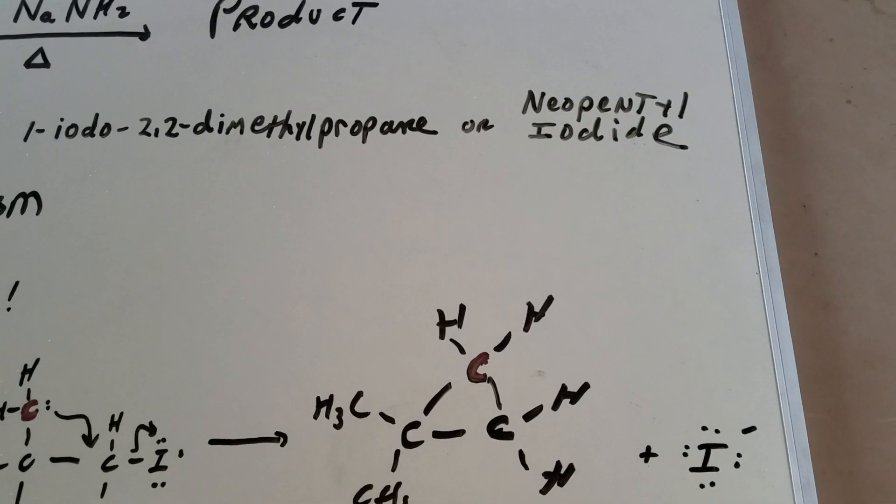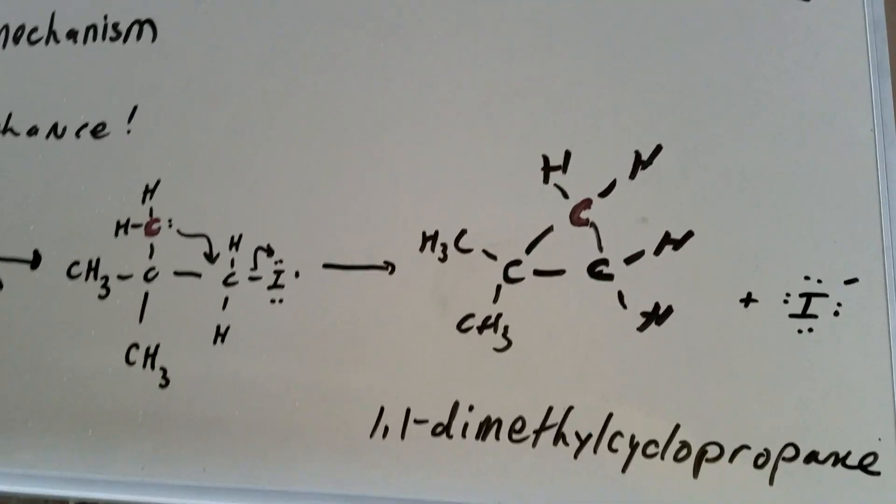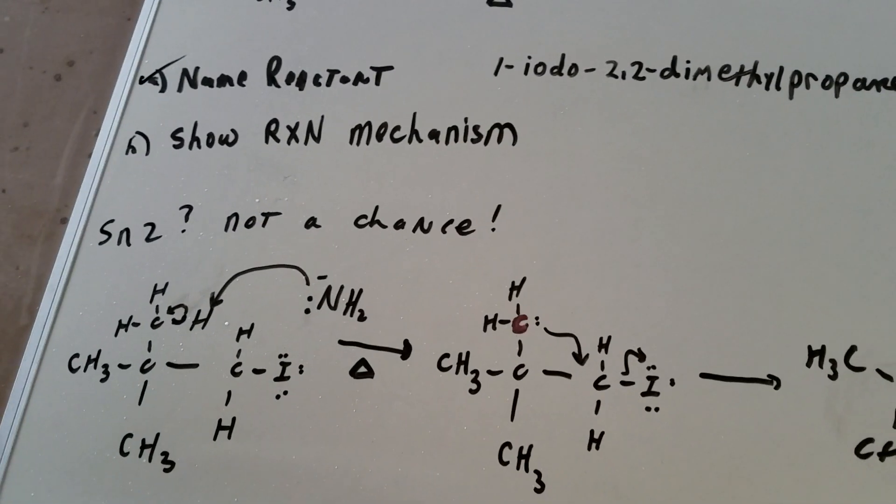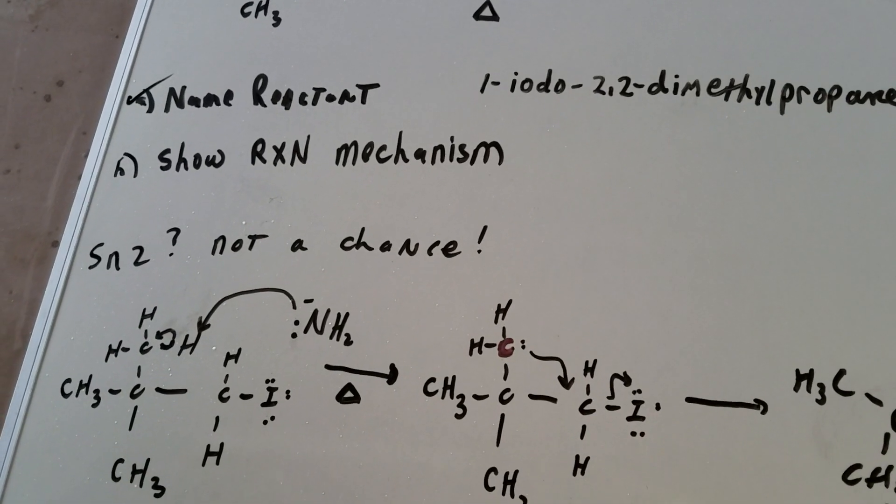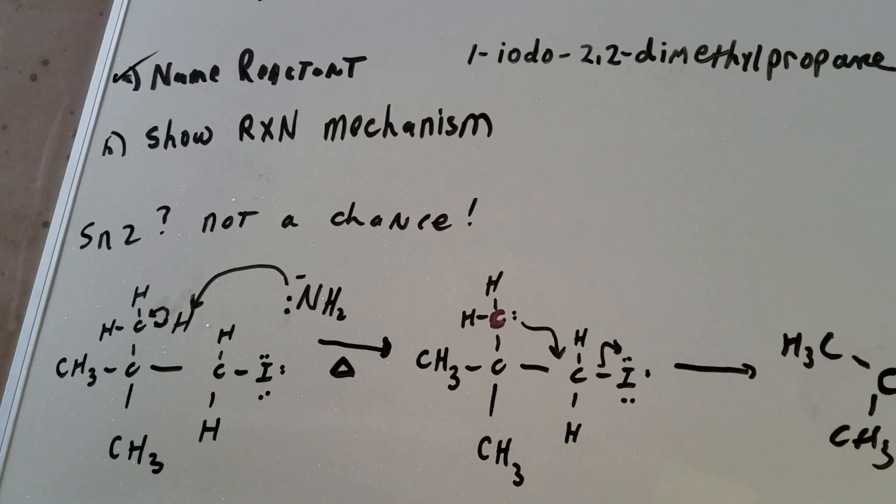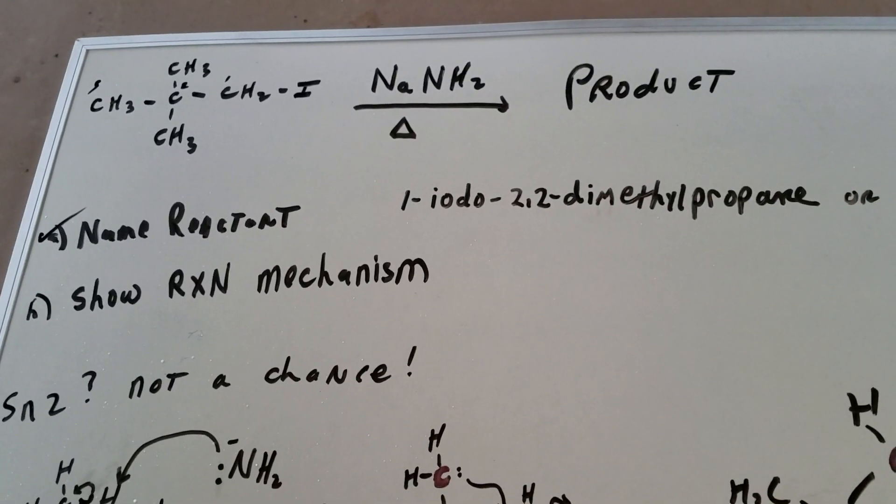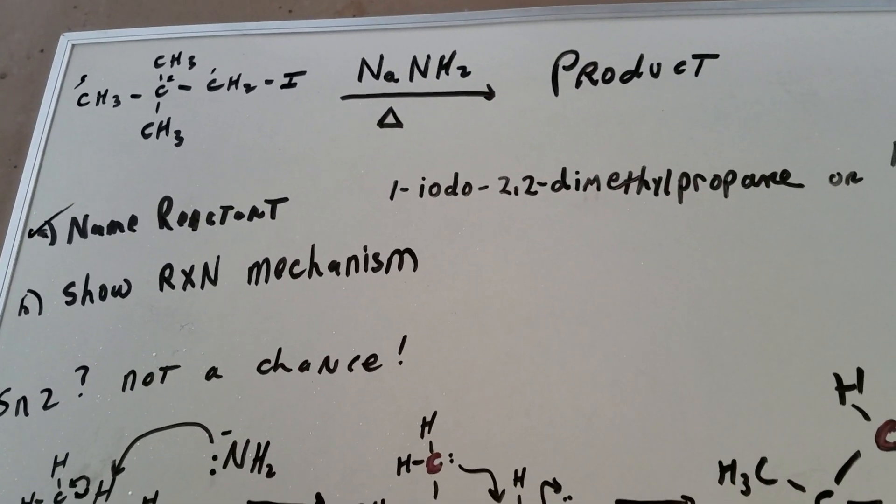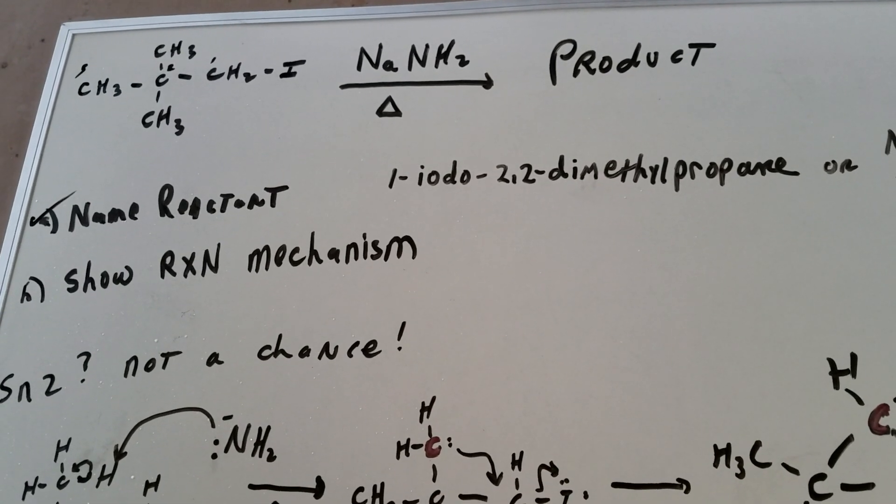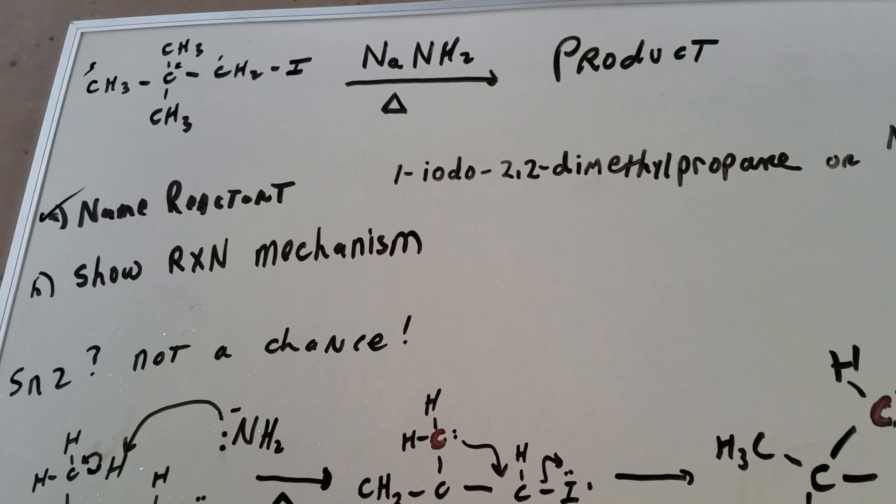Now, the reaction mechanism. This particular problem, every student got wrong on the study group. First of all, a lot of kids thought it could be an SN2 where you would simply knock out the iodine and put in an NH2 group. And the logic is, well, it's a primary halide. It's a primary halide.